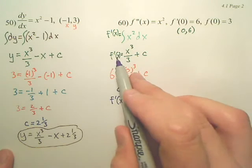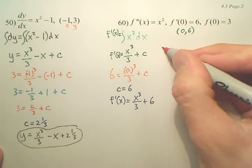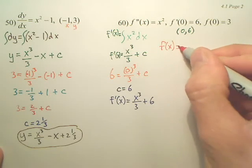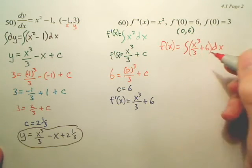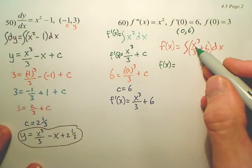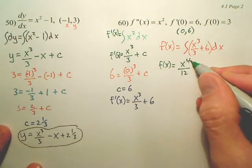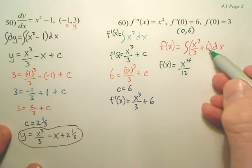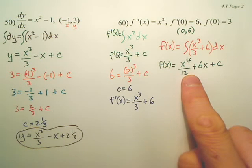This is a particular solution; the previous was a general. I want to work back one more step to my original. To find my original function f of x, that's going to be the integral of x cubed over 3 plus 6 dx — I want the original to be the integral of the derivative. So f of x: add 1 to 3 to get 4, divide by 4, giving x to the fourth over 12, then 6x, plus c. This is the general solution of the original function.